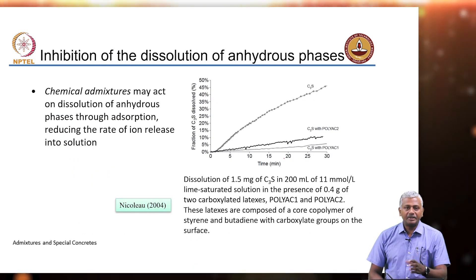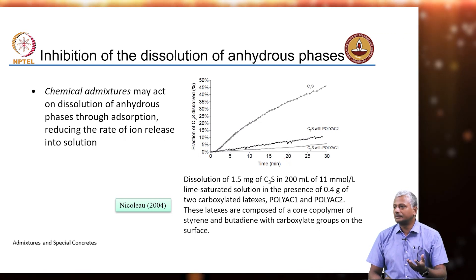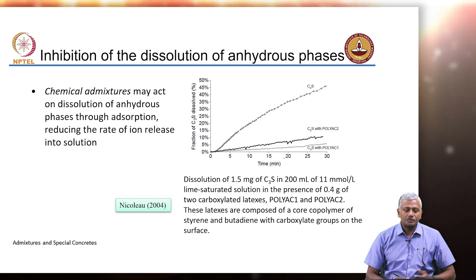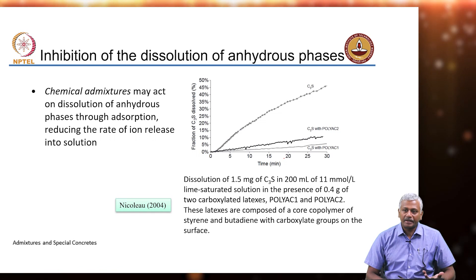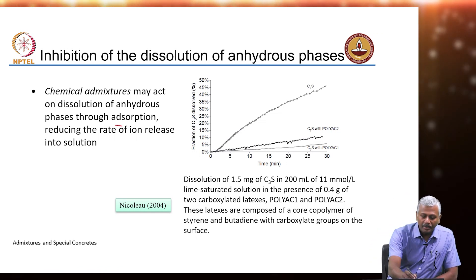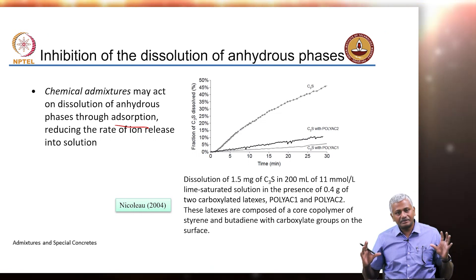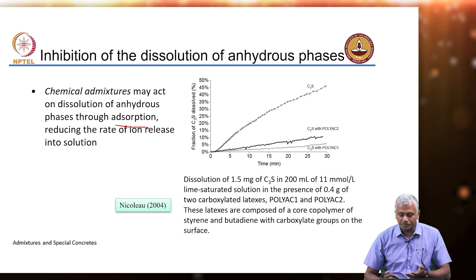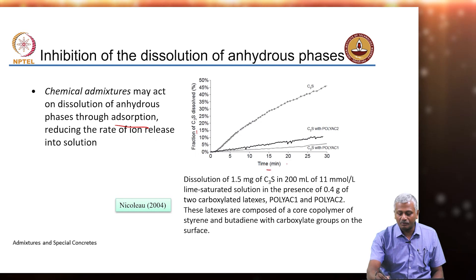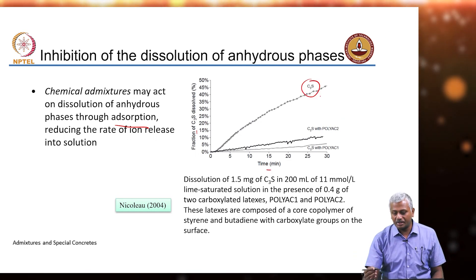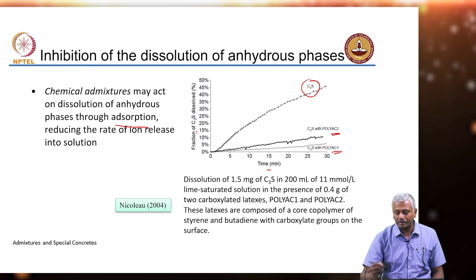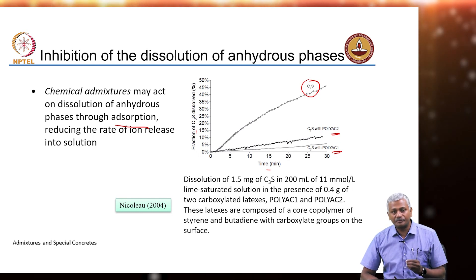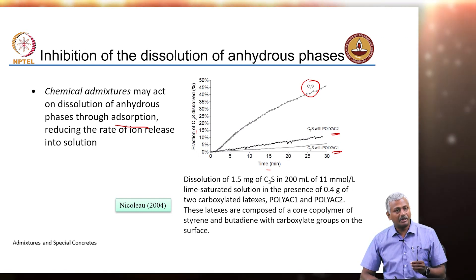The mechanism again involves accelerators and retarders affecting the rate at which dissolution of cementitious phases happens. The mechanism may depend on adsorption — these molecules get adsorbed onto the cement surface, preventing the rate at which they dissolve in solution. An experiment shows the fraction of C3S dissolved versus time for no-admixture versus polyacrylate 1 and polyacrylate 2, using 1.5 mg of C3S in a lime-saturated dilute solution.